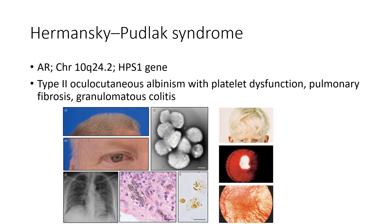Next is Hermansky-Pudlak syndrome. It is an autosomal recessive condition with type 2 oculocutaneous albinism, platelet dysfunction, pulmonary fibrosis, and granulomatous colitis. Clinical images show cutaneous and ocular albinism along with pulmonary fibrosis.